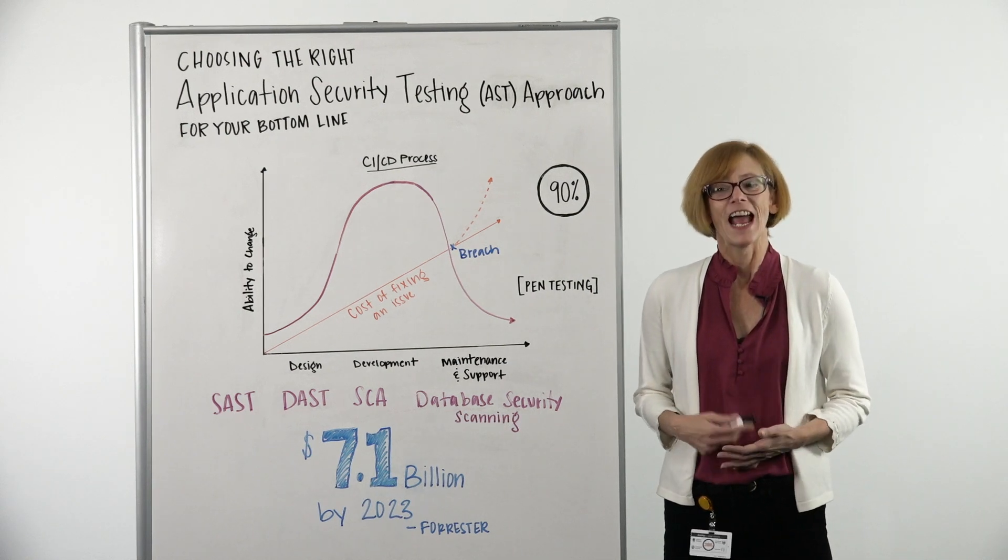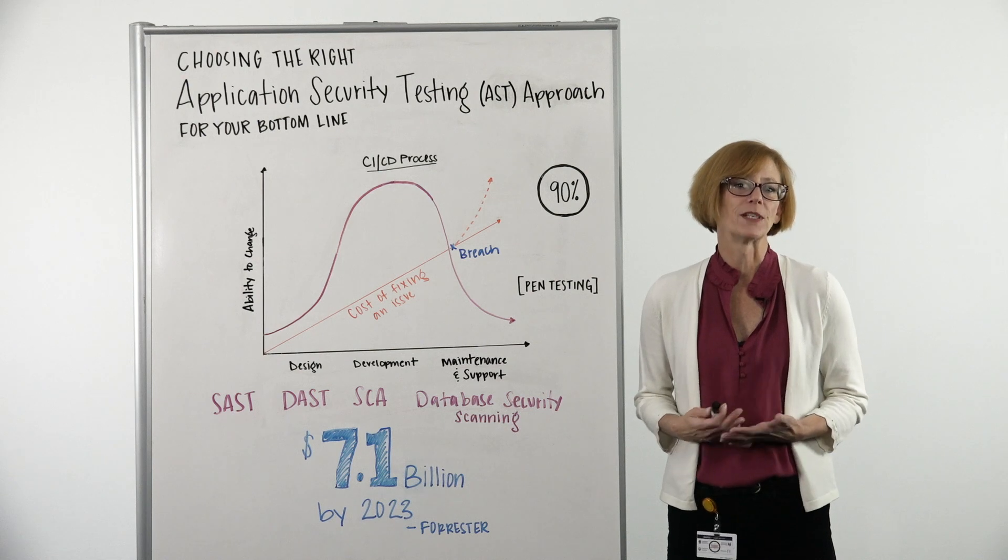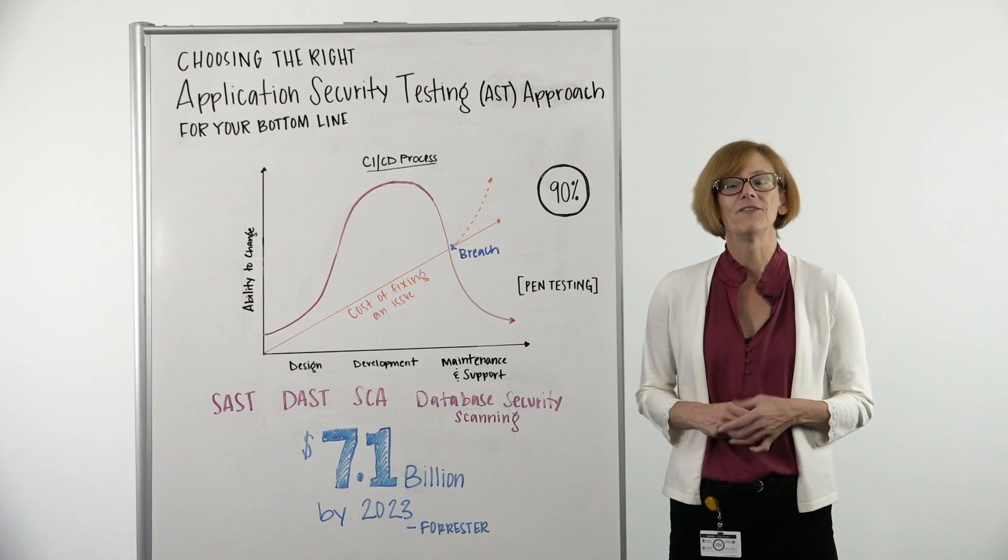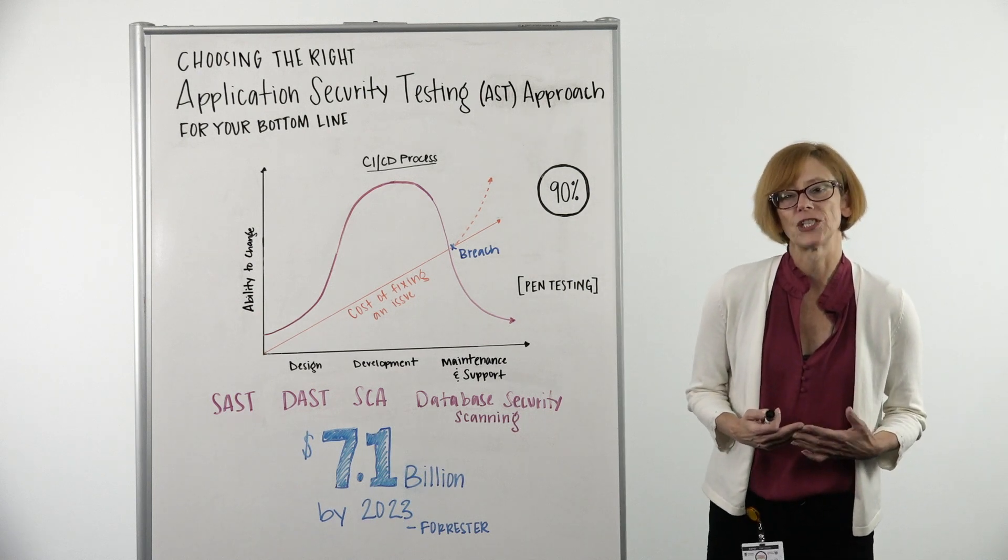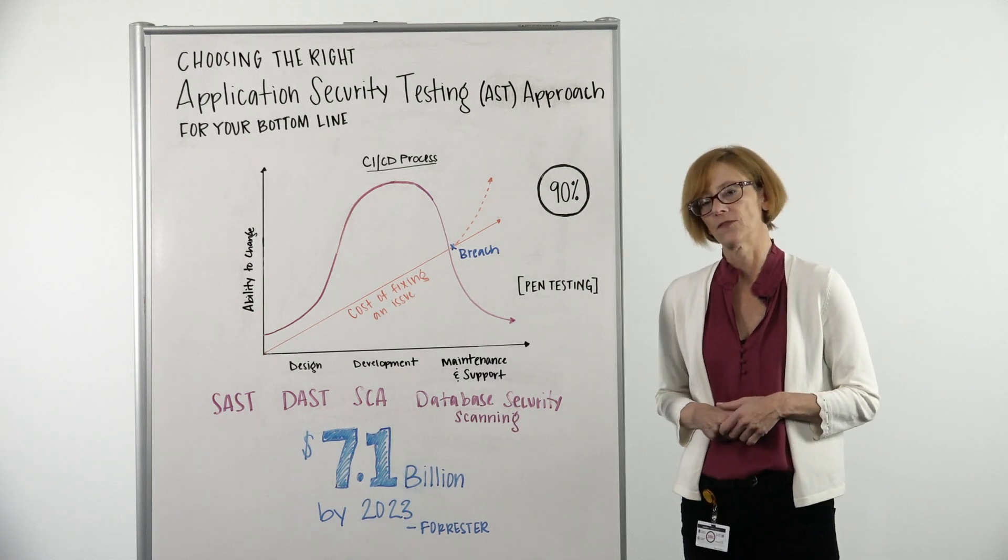Software composition analysis actually tests third-party or open source code. And then finally, database scanning, which essentially checks for patches and weak passwords and so forth.